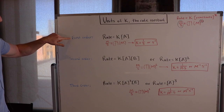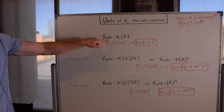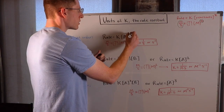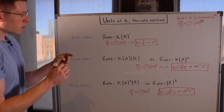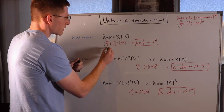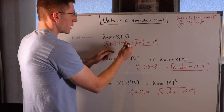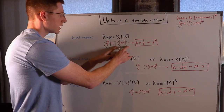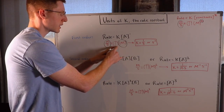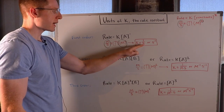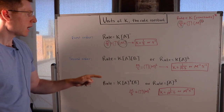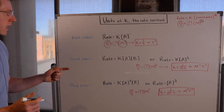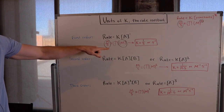If our reaction has an overall first order, with reactant A, rate equals the rate constant times concentration of A to the first power. We know rate is in units molarity per second — that doesn't change — and this A to the first power has units of molarity to the first power. So how do I make molarity equal to molarity per second? If I put in one over seconds, or seconds to the negative one, I get molarity over seconds, just like molarity per second. So K in a first order overall reaction has units of 1/s.